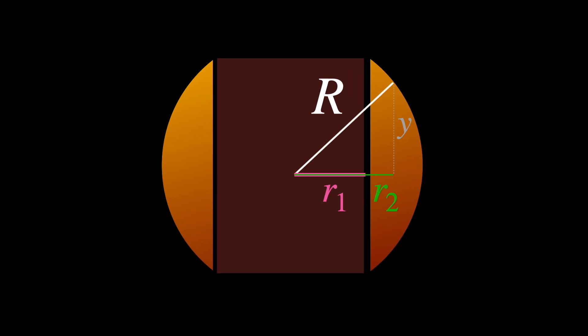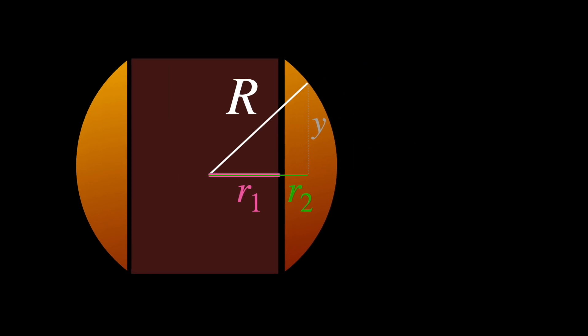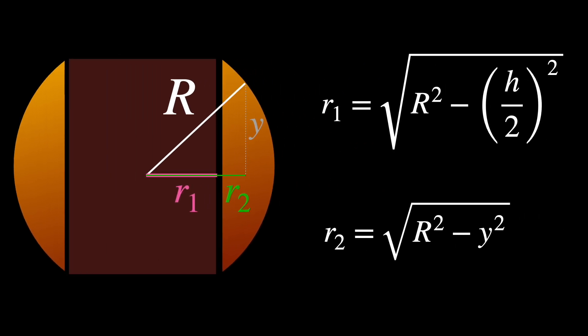The second is the radius that we will call R1, corresponding to the radius of the cylinder. And the third is R2, which is this horizontal length in green, formed when you pick a specific point at a specific height Y in the band. So we can write these radii as R1 equals the square root of capital R squared minus h over 2 squared, and R2 is equal to the square root of capital R squared minus y squared.